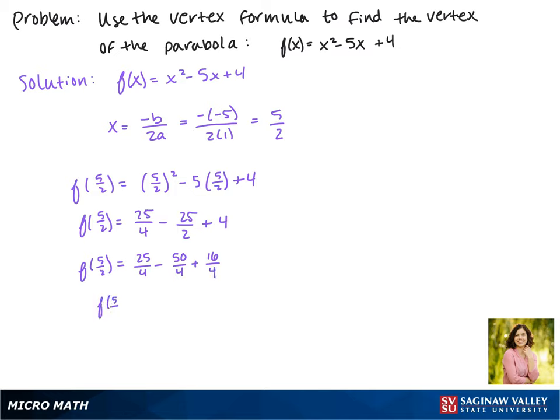25 minus 50 is -25, so we have -25/4 + 16/4. So our y value is -9/4. This makes our vertex the point (5/2, -9/4).